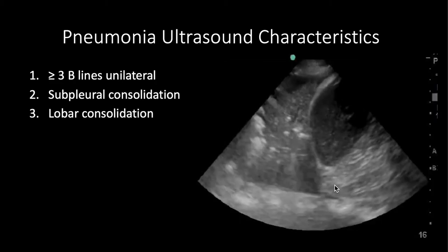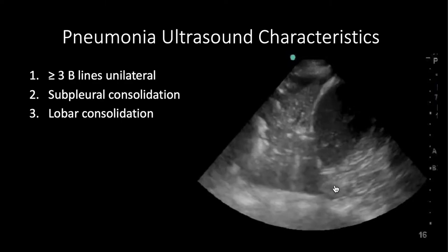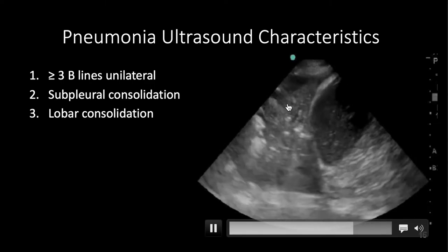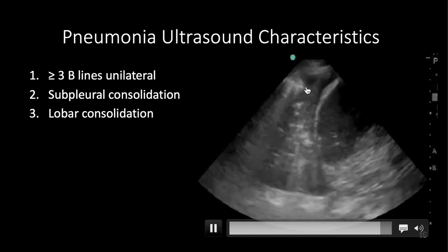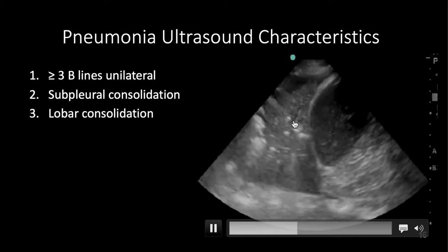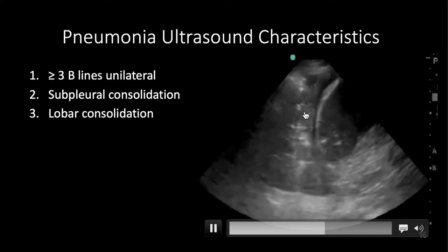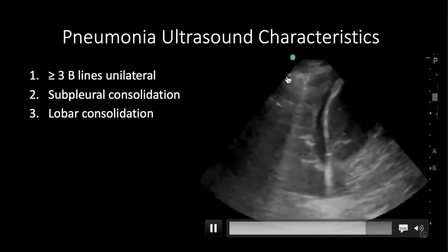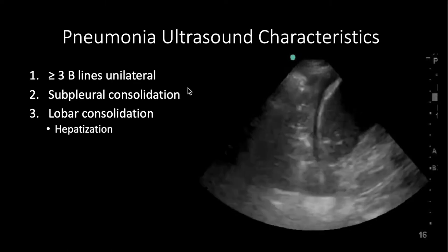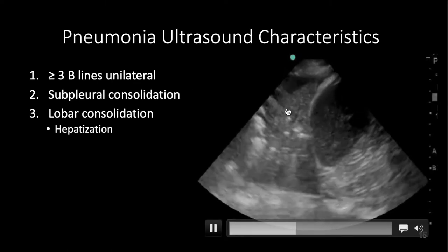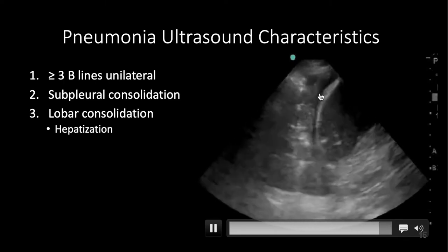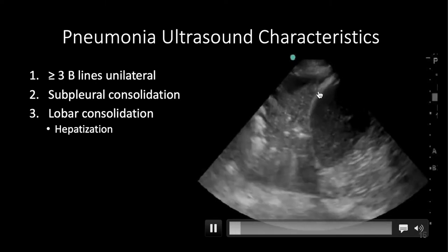When even more pus builds up in the alveoli, you get larger lobar consolidations. This is a severe lobar consolidation where the lung is filled with pus. As the patient breathes in, they bring a little more lung into view, which has B-lines. Some people call this hepatization of the lung, where the lung is behaving like a solid organ — just like the liver — because there's no longer air in the lung. It's all been filled with purulent, infectious material.